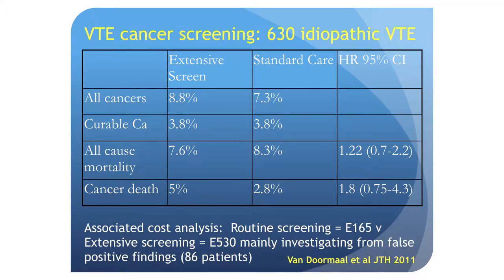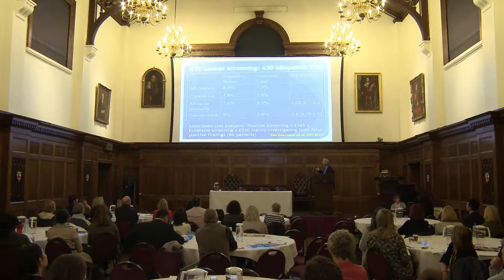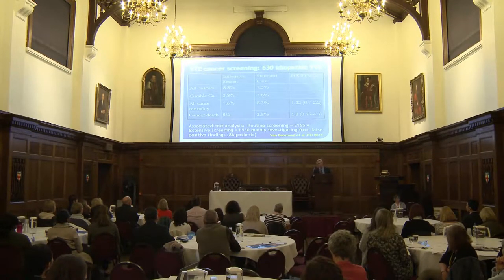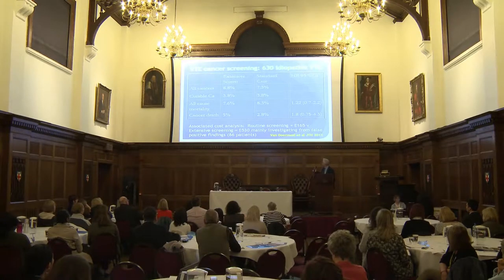The so-called Trousseau study by Van Dormand showed a lot more patients — 630 idiopathic thromboses — and the curable cancers and cancer-related mortality were exactly the same between groups. What this study did show was that in routine screening the cost was around 165 euros, but the investigation of false positive findings significantly increased the expense of extensive CT-scanned patients.